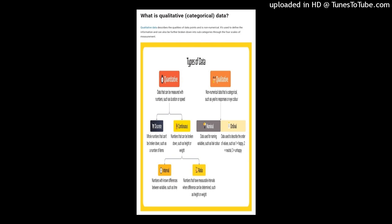The nominal scale of measurement defines the identity property of data. This scale has certain characteristics but doesn't have any numerical meaning. The data can be placed into categories but cannot be multiplied, divided, added, or subtracted from one another, and it is not possible to measure the differences between data points.